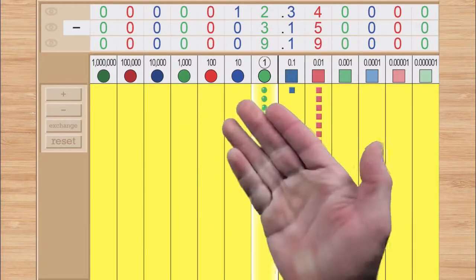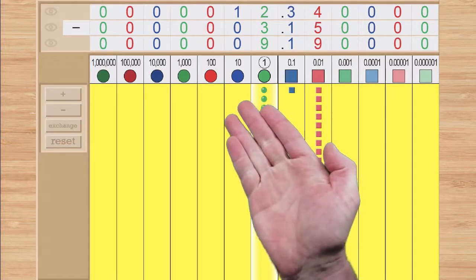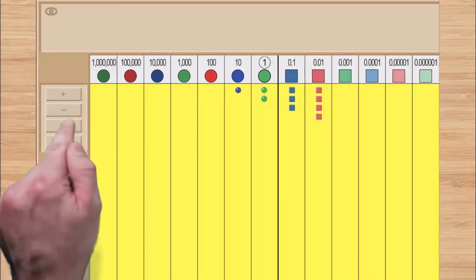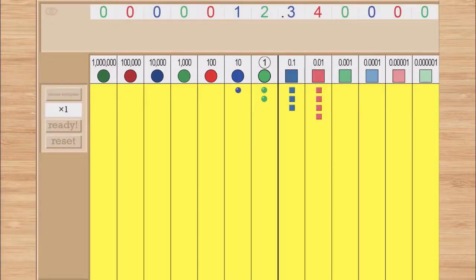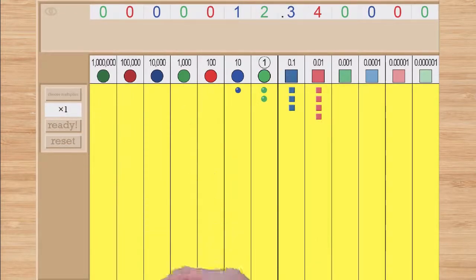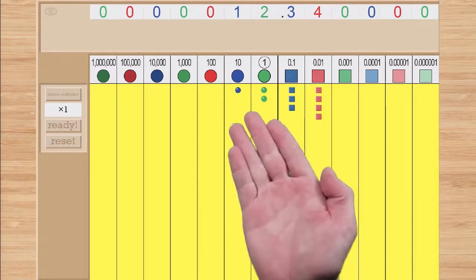There is one more operation available on the pocket decimal board: multiplication. Entering operation mode for multiplication will prompt you to choose a multiplier to apply to your multiplicand. Let's use 4.